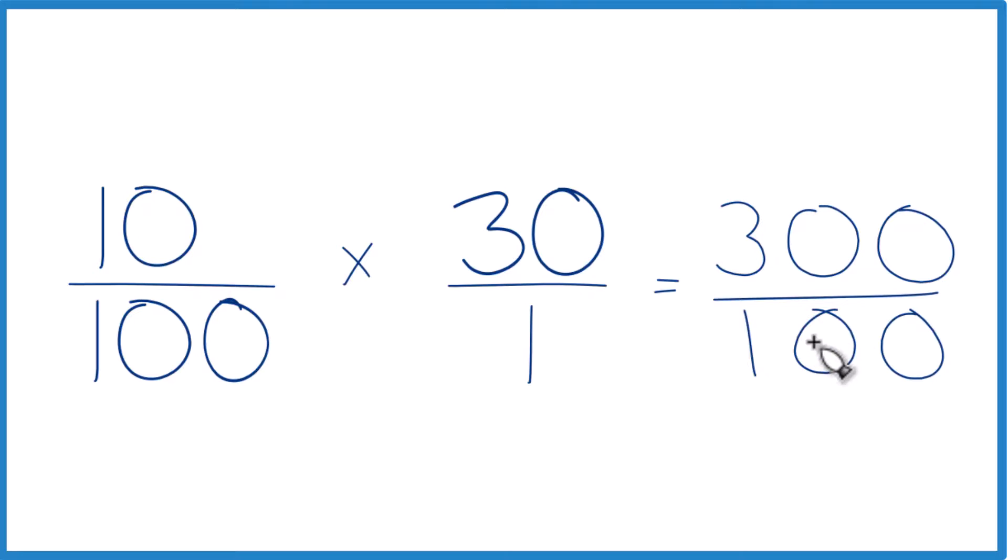And it's pretty easy to see. 300 divided by 100, that equals 3. That's what we found before. This method works for all kinds of percents. So maybe a better way to do it.